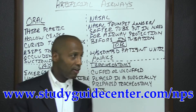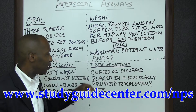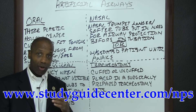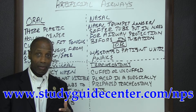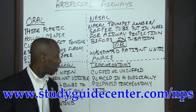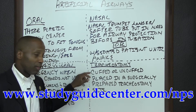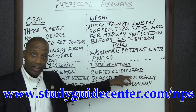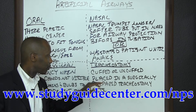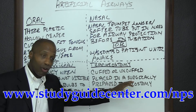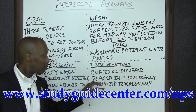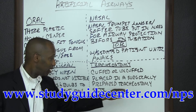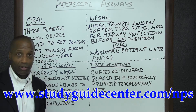Lastly, with tracheostomy artificial airways, they come either cuffed or uncuffed, and they're placed in a surgically prepared tracheostomy site.